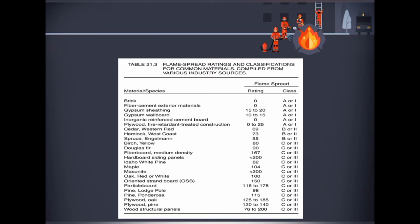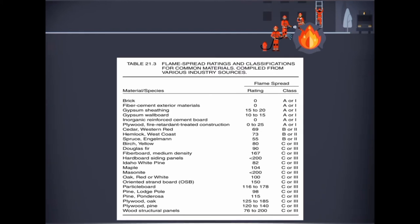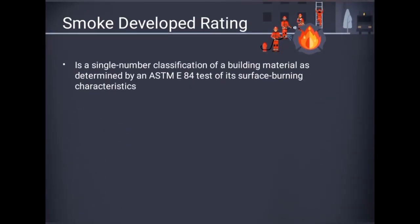In general, inorganic materials such as brick or tile are Class A materials. Reconstituted wood materials such as plywood, particle board, and hardboard are Class C. Most wood products have a flame spread rating less than 200 and are considered Class C material. A few species qualify as Class B materials. The smoke developed rating is a single number classification determined by an ASTM E84 test of surface burning characteristics, expressed as a ratio of the smoke emitted by a burning material to the smoke emitted by the red oak standard material.